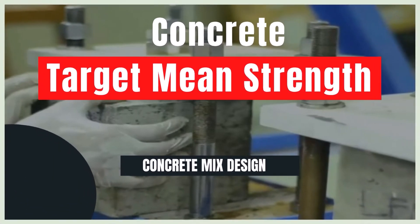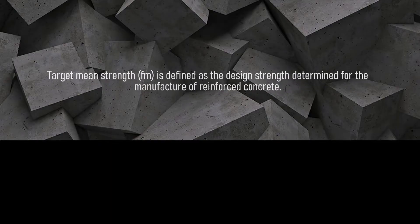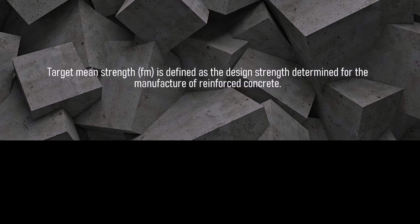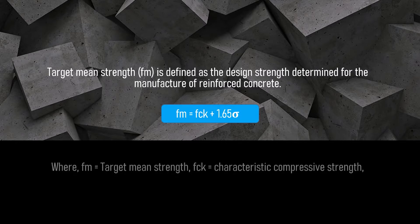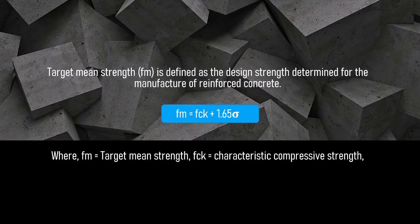Target mean strength is defined as the design strength determined for the manufacture of reinforced concrete. Target mean strength is determined by the formula Fm equals Fck plus 1.65 sigma, where Fm is target mean strength, Fck is the characteristic compressive strength, and sigma is the standard deviation.